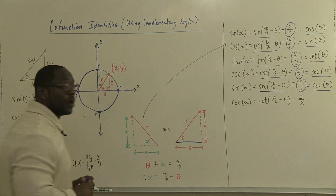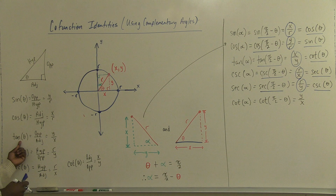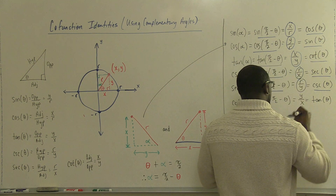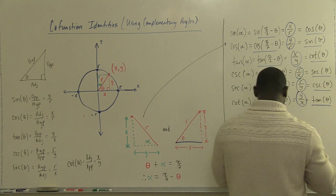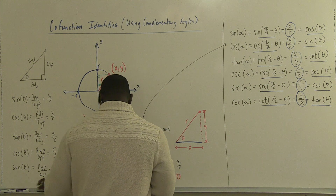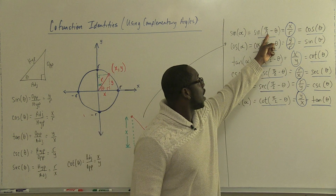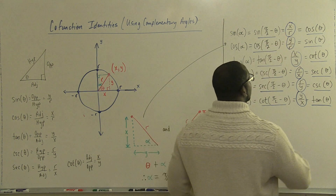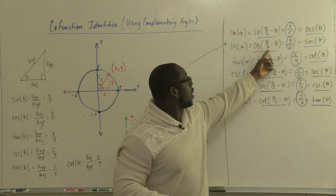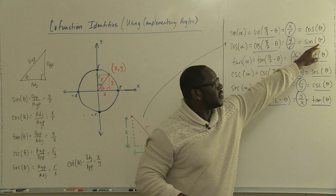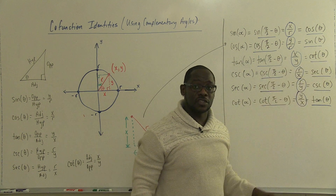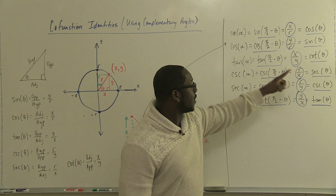Lastly, y divided by x is the same as tangent, so cotangent of pi over 2 minus theta equals tangent theta. When we put all this together, we see that sine of pi over 2 minus theta equals cosine theta, cosine of pi over 2 minus theta equals sine theta, and tangent of pi over 2 minus theta equals cotangent theta. That is the connection between the two triangles.